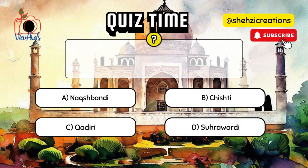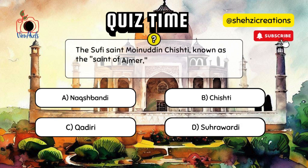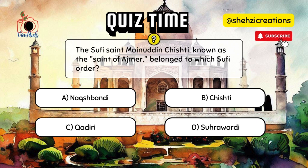The Sufi Saint Mohinuddin Chishti, known as the Saint of Ajmer, belonged to which Sufi order?